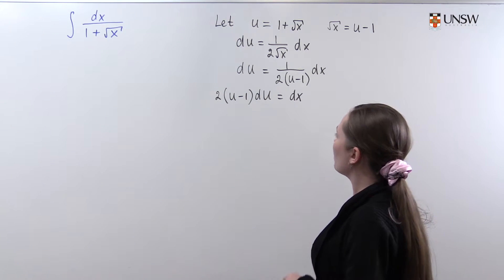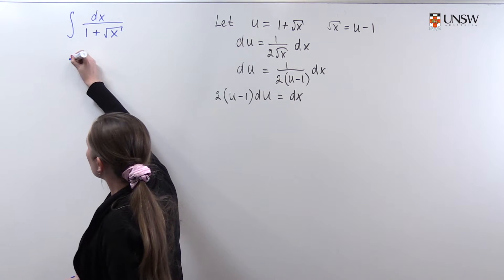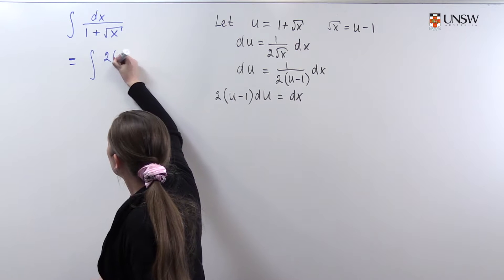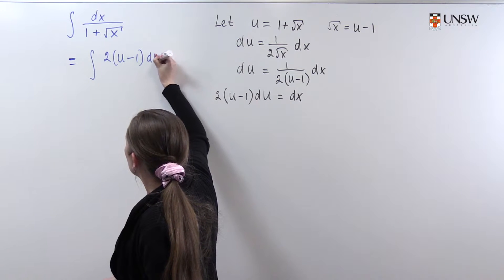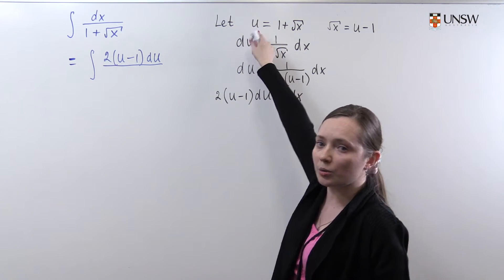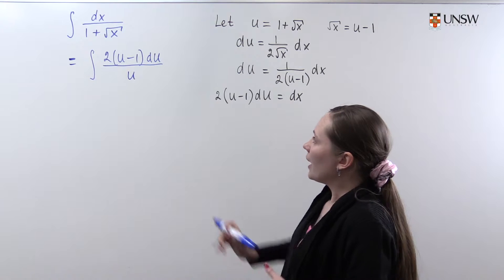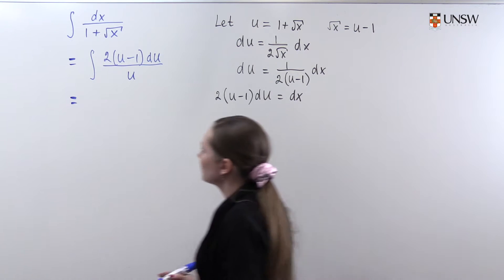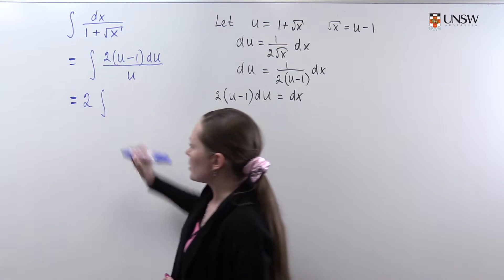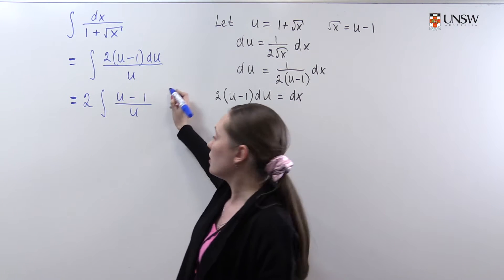Now we are ready to make the substitution. Substituting into the integral, dx becomes 2(u minus 1) du, and 1 plus square root of x is just u. So the integral becomes 2 times the integral of (u minus 1) over u du, where we take the constant 2 out of the integral.